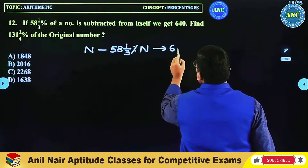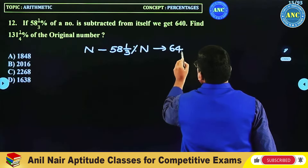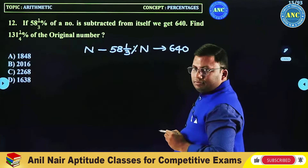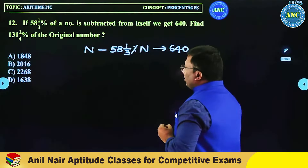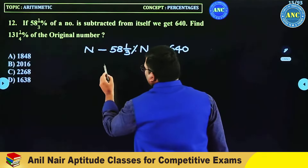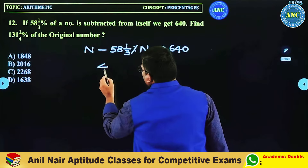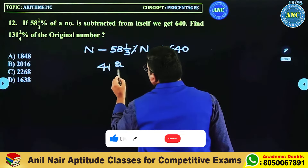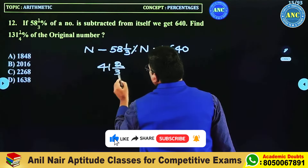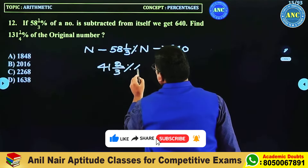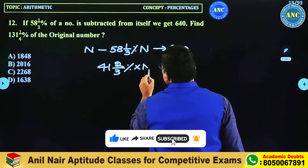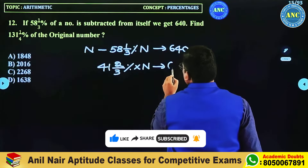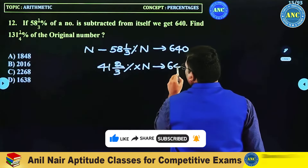We got 640. That remaining portion is 41 and 2/3 percentage. So 41 and 2/3 percentage of n is 640.